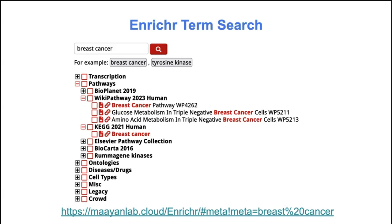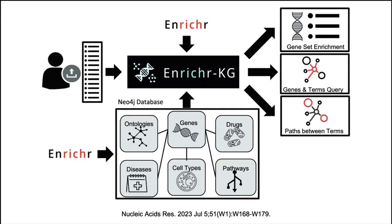Enrichr is actually one of our more popular tools in the lab. But imagine — what if instead of viewing enrichment analysis on separate gene set libraries, we could have an integrated view combining information on ontology, genes, drugs, diseases, cell types, and pathways in a subnetwork? You could see, for example, that this ontology is overlapping with cell types based on specific genes. You can potentially get more information visually by employing this knowledge graph.